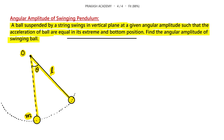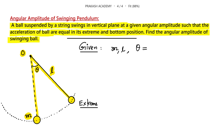So what are the things given in this problem? We have been given mass M, length L, and the extreme position is known. We have to find the angular amplitude theta, which is the unknown.